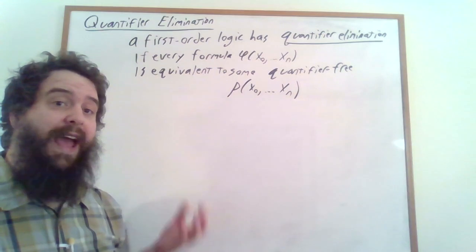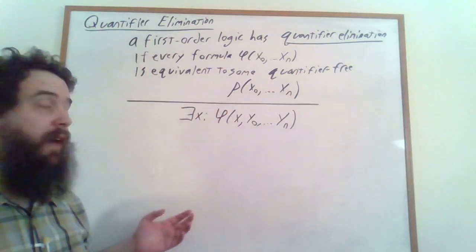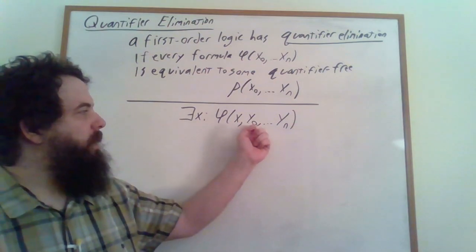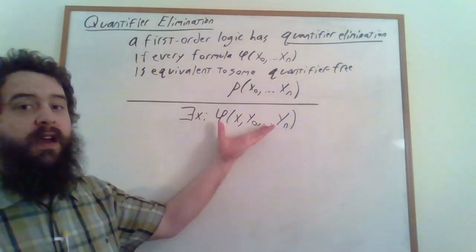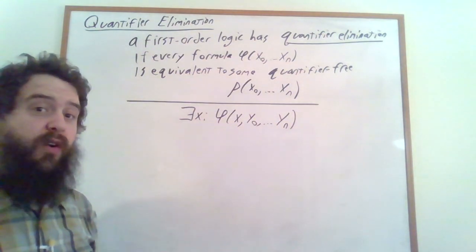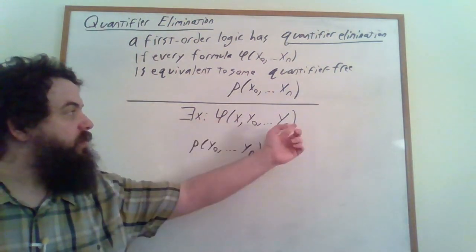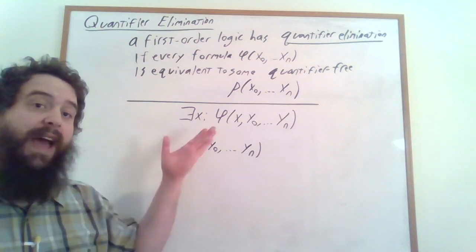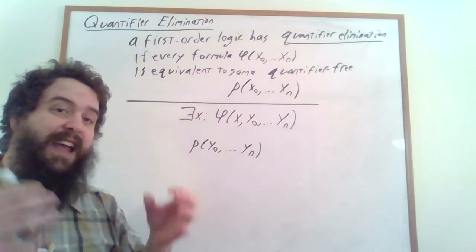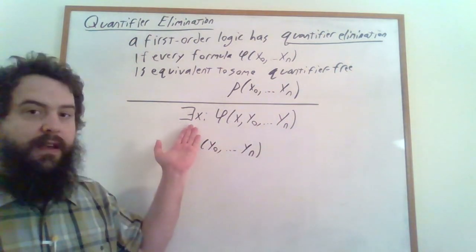In order to prove that a particular theory has quantifier elimination, all we really need to do is prove that we can eliminate a single quantifier. Suppose that we have some sort of formula of the form: there exists an x such that something is true involving x and a bunch of other variables y-0 through y-n. And this phi here doesn't have any quantifiers in it. And suppose that we could turn it into an equivalent formula with no quantifiers of just the free variables y-0 through y-n. If we have this particular reduction process, we can work our way through a formula that has lots of quantifiers, working from the inside out, and every time we encounter a quantifier, we can just get rid of it using this particular procedure — at least if it's a there-exists quantifier.